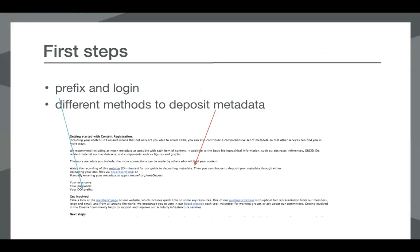When you sign up as a Crossref member, we will give you a DOI prefix — which starts with 10 dot and then a five-digit number — and a login for our Crossref systems. We'll also point you towards a webinar that gives a guide to depositing metadata. Some members are very familiar with XML and send it to us programmatically. Some aren't, so we have very simple methods including a web form where you can just type in the information, enter your login details, and hit submit — without having to get into XML.